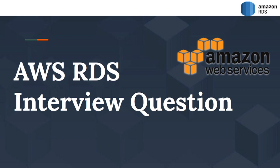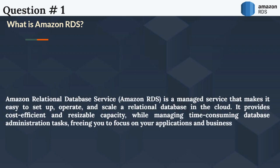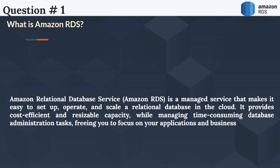The first question is: What is Amazon RDS? Amazon Relational Database Service, Amazon RDS, is a managed service that makes it easy to set up, operate, and scale a relational database in the cloud. It provides cost-efficient and resizable capacity, while managing time-consuming database administration tasks, freeing you to focus on your applications and business.